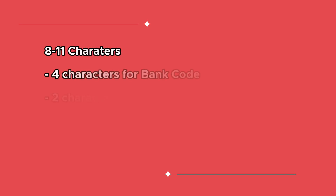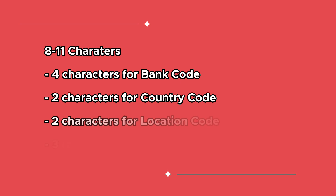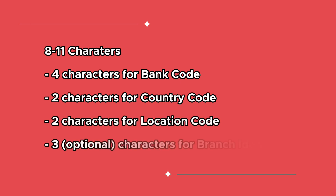A SWIFT code consists of 8 to 11 characters: 4 characters for the bank code, 2 characters for the country code, another 2 for the location code, and an optional 3 characters for the branch identifier.